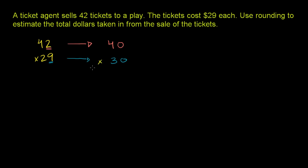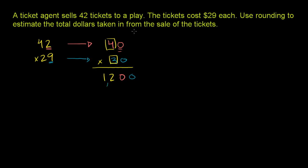Here, we can use a trick — or hopefully you understand why it works. 30 times 40 is the same thing as 3 times 4, but we put two zeros at the end of it. 3 times 4 is 12, and then we have two zeros. So we're going to have roughly $1,200 taken in from sales of the tickets. That is our estimate.